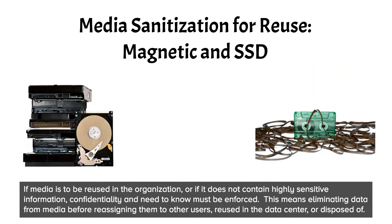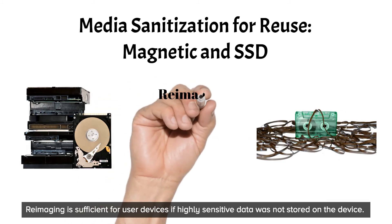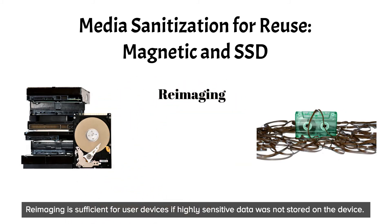If media is to be reused in the organization or if it does not contain highly sensitive information, confidentiality and need-to-know must still be enforced. This means eliminating data from media before reassigning it to other users, reusing it in the data center, or disposing of it. Reimaging is sufficient for user devices if highly sensitive data was not stored on the device, and includes a complete overwrite of all writable space.